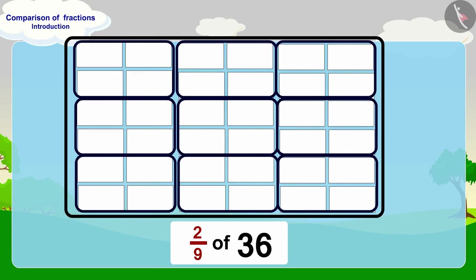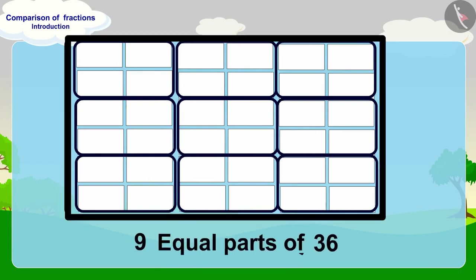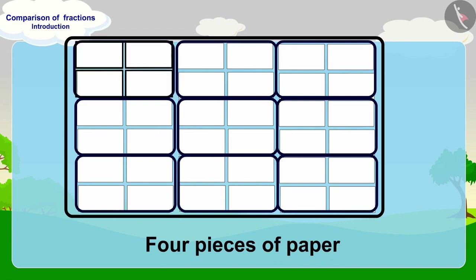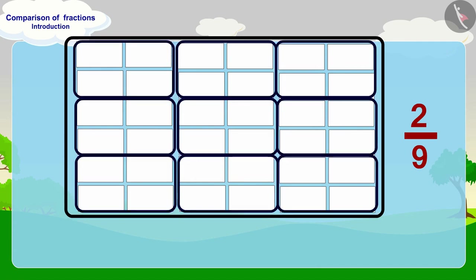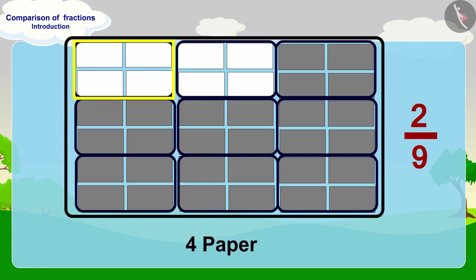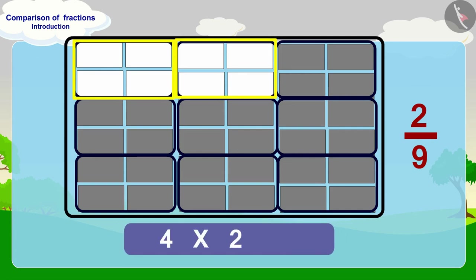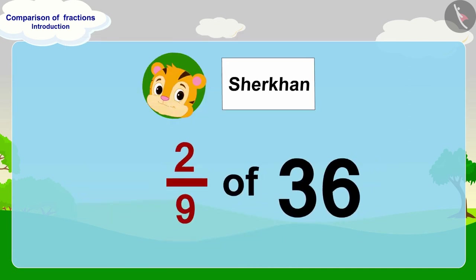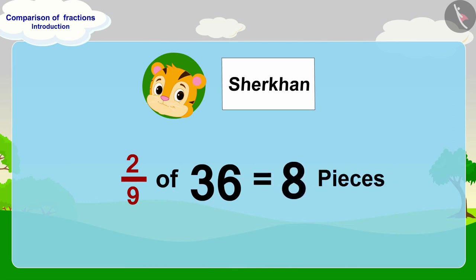Well done children, you have solved it perfectly. For two ninths of 36, we will divide 36 into nine equal parts. In this way, each part will have four pieces of paper. And in two ninths, we are taking two of these nine equal parts. There are four pieces of paper in one part of this fraction, so how many pieces will there be in two parts? Two multiplied by four — eight pieces of paper. In this way, two ninths of 36 is eight pieces of paper. Shere Khan has written his name on a total of eight pieces of paper.